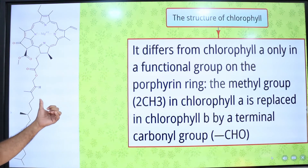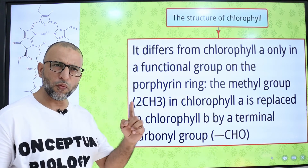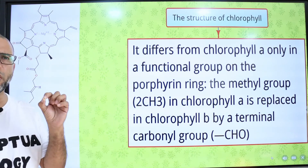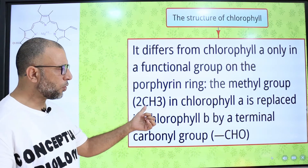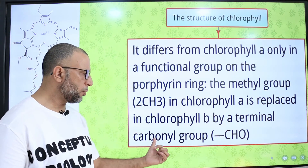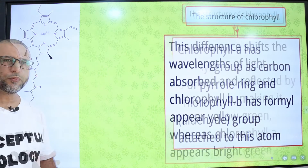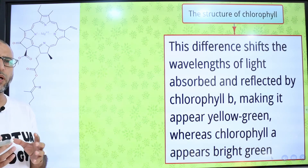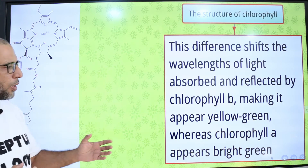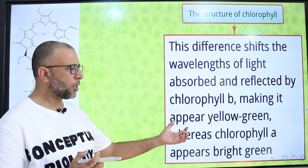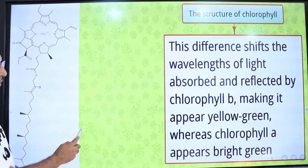The difference between chlorophyll A and chlorophyll B is only in one functional group on the porphyrin ring. Chlorophyll A has a methyl group and chlorophyll B has a terminal carbonyl group. This difference shifts the wavelength of light absorbed and reflected by chlorophyll B, making it appear yellow-green, while chlorophyll A appears bright green.